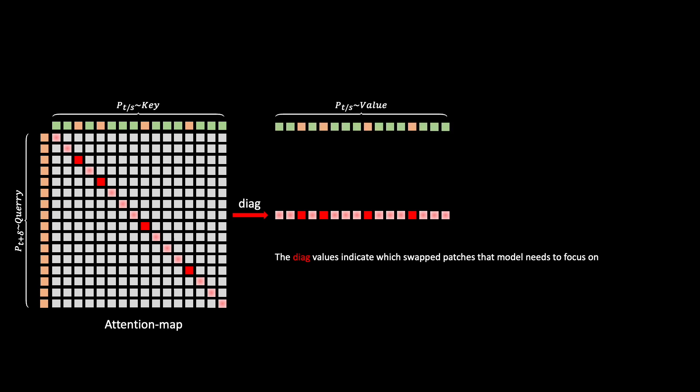By multiplying with the features of swapped images, the method is able to strengthen the swapped features and guide the model to pay more or less attention to which patch.